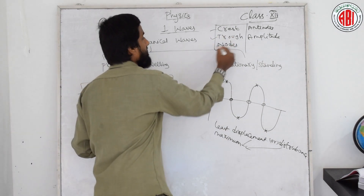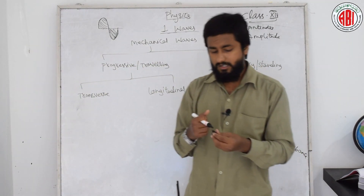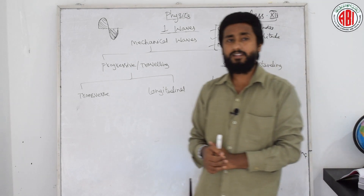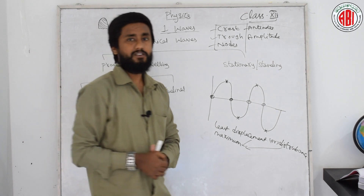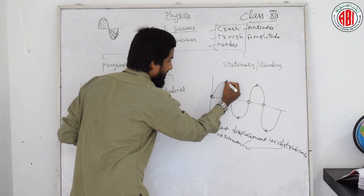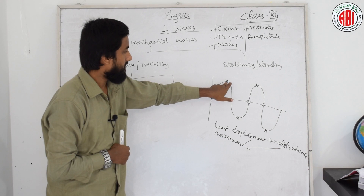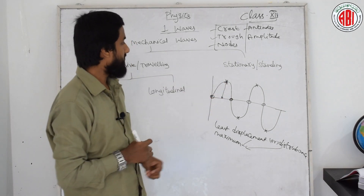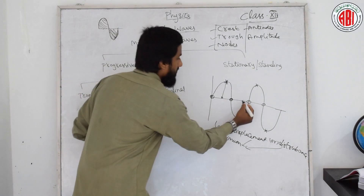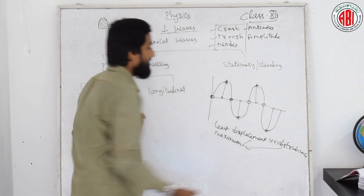Hope you understood the terms crest, trough, node, and antinode. Now coming to amplitude. What is amplitude? Amplitude is nothing but — as you already learned in Intermediate First Year Physics — the place where the maximum displacement takes place. The distance from the center to the crest. This line is nothing but amplitude. The distance from the center to the crest is nothing but amplitude. This is one amplitude.